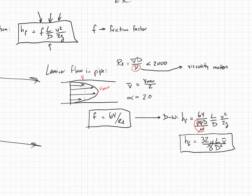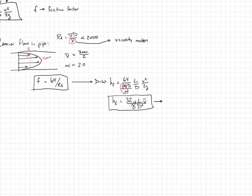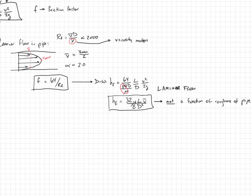Before we work an example, there's one interesting thing to note: this result is for laminar flow, and notice it is not a function of the roughness of the pipe. So it doesn't matter if the pipe is glass, concrete, or whatever material — if it's laminar flow, the roughness of the pipe does not matter. That's a very interesting result. Now let's work an example before moving on to the turbulent case.